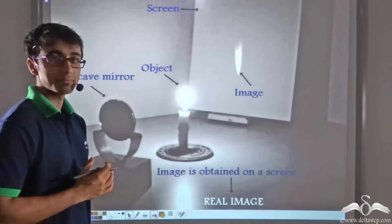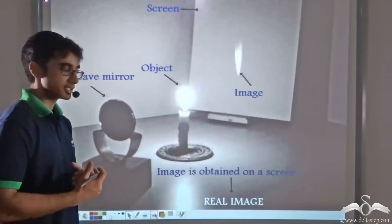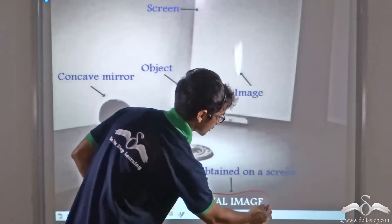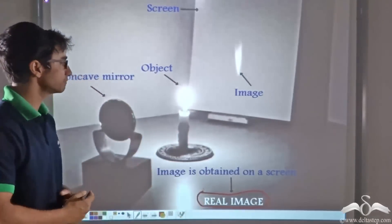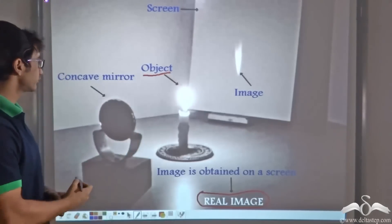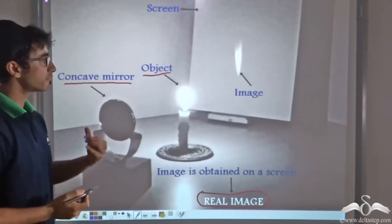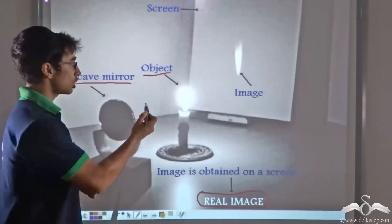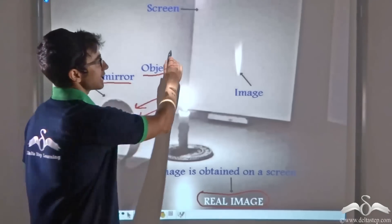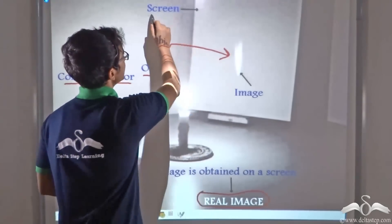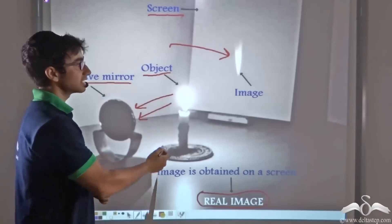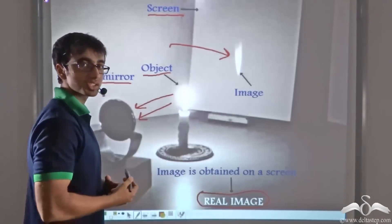Such an image that can be obtained in space or in the real world is known as a real image. As you can clearly see from this picture, a candle — the object — has been kept in front of a concave mirror, and we find that the image of the candle after reflection from the concave mirror has been obtained on a screen placed behind the object. In case of a real image, the object and the image are always on the same side.